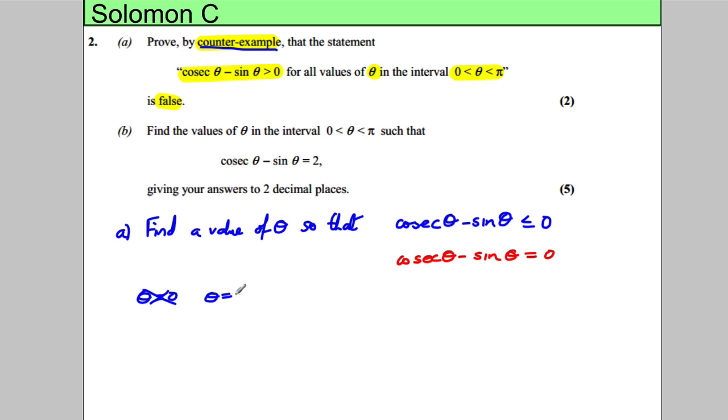But what about θ equals π by two? One over sine of π by two, subtract sine of π by two. Now, sine of π by two, sine of 90 is equal to one. So one over one is one, take away one is equal to zero.